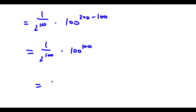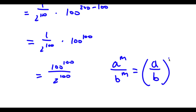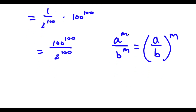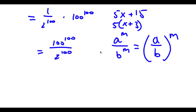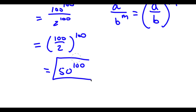Now, we can go ahead and multiply these two again, so now I'll have 100 to the power of 100 over 2 to the power of 100. Now, if I have something in the form a to the power of m over b to the power of m, this is the same thing as a over b to the power of m. We are factoring out our exponent because both terms share the same exponent and the same factor. So now this would equal 100 over 2 to the power of 100. 100 over 2 is equal to 50, so I have 50 to the power of 100, and this is our answer.